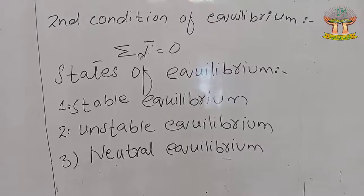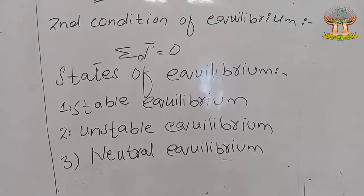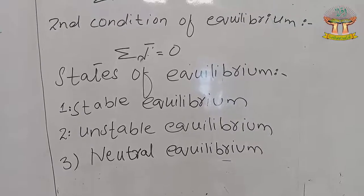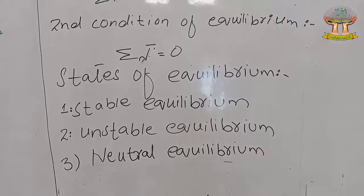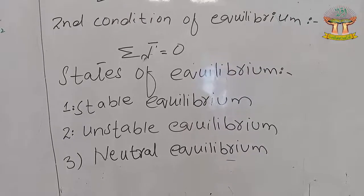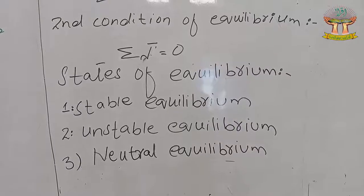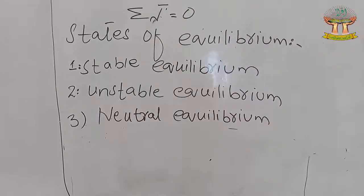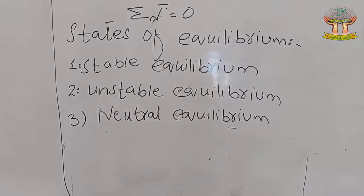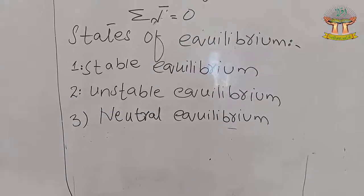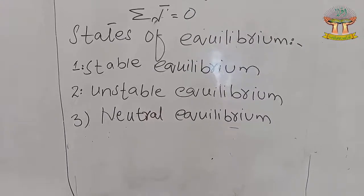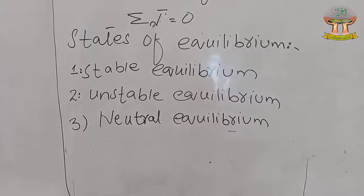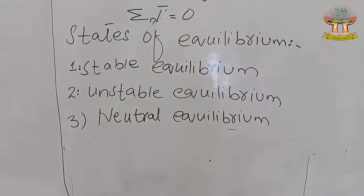Unstable equilibrium occurs when the center of gravity of a body lies above the point of suspension or support, and the body is said to be in unstable equilibrium. An example is a pencil balanced on its tip — it remains stable only as long as we support it. Once support is removed, its center of gravity shifts and it falls into an unstable state.